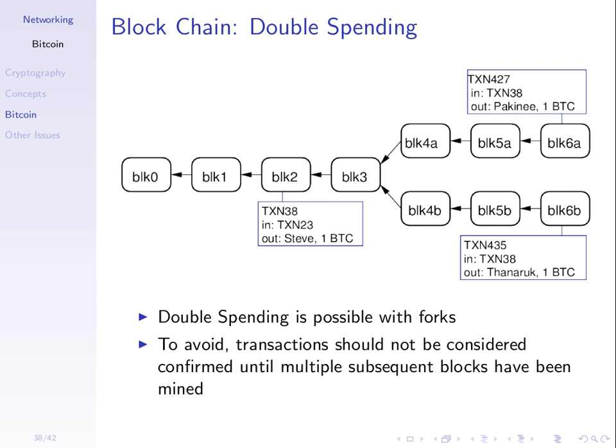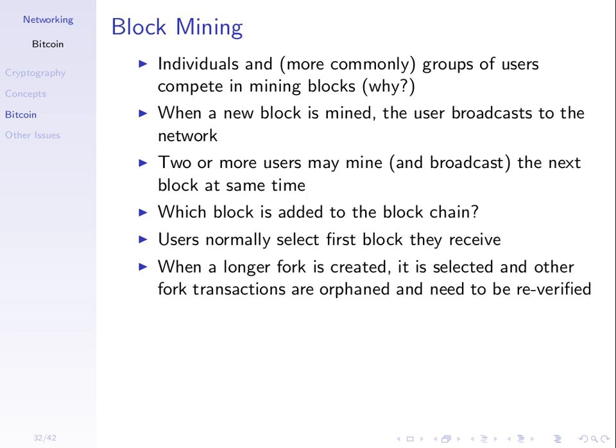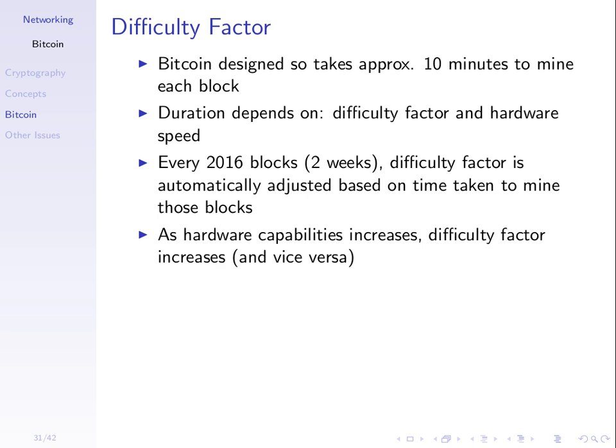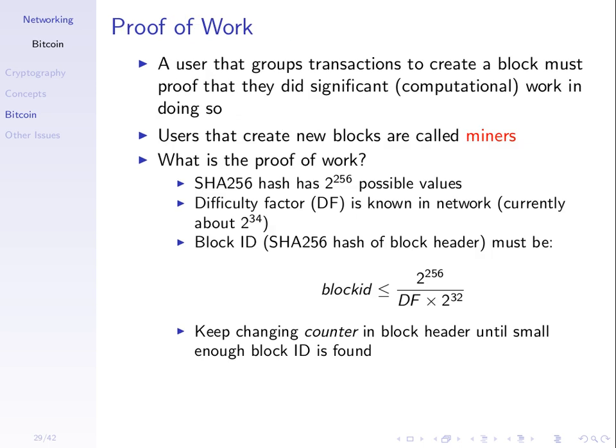So why create blocks? Creating blocks is called mining. We create blocks to keep the transaction log consistent — everyone agrees upon the same set of transactions. If people agree upon different sets, we get problems like double spending. The system is set up so that creating a new block takes some effort — you need to prove that you did work. This is the concept of proof of work. The users that create new blocks are called miners — this is Bitcoin mining.